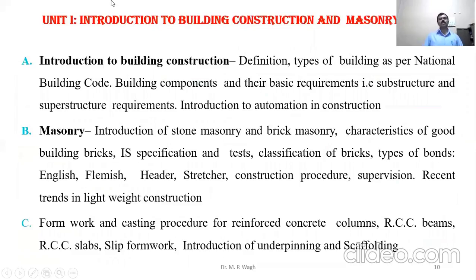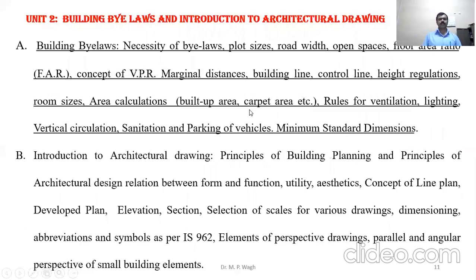Unit 1 is Introduction to Building Construction and Masonry, which requires six hours. It consists of introduction to building construction, masonry, and form work. Unit 2 consists of building bylaws — necessity of building bylaws, built-up area, carpet area, rules for ventilation, lighting, vertical circulation, sanitation, and parking of vehicles.